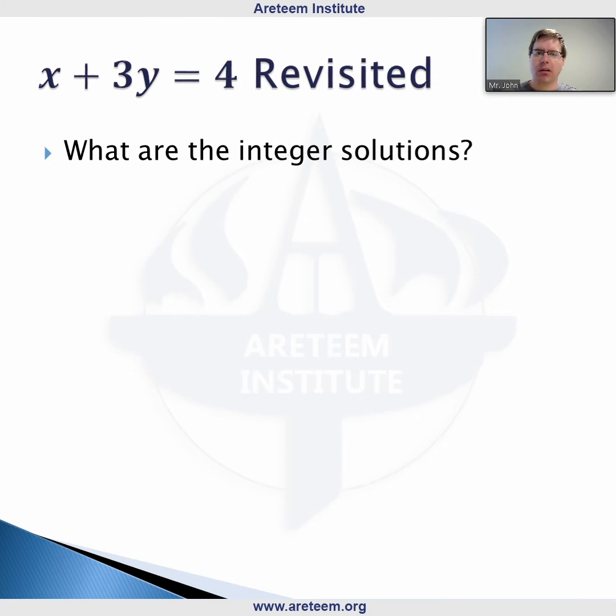Let's go back to our simple one: x plus 3y equals 4 again. As a way of writing out the integer solutions, we started with one solution. We had 4, and when x is 4, y is 0. One way to think about turning our picture of rise over run into explaining all solutions...